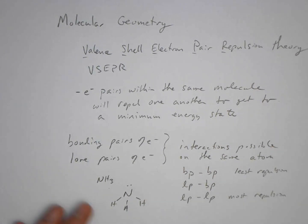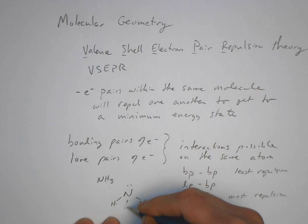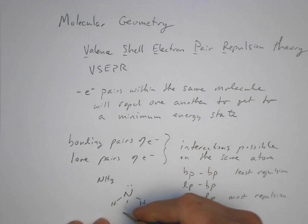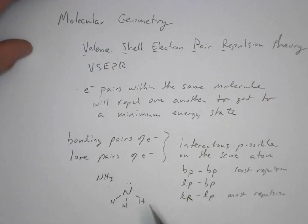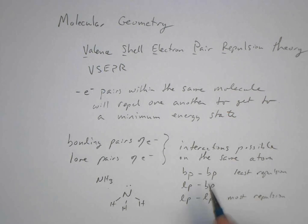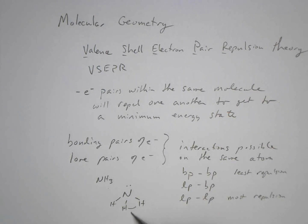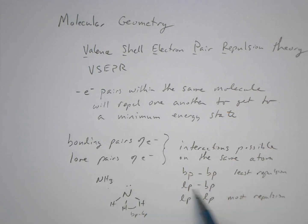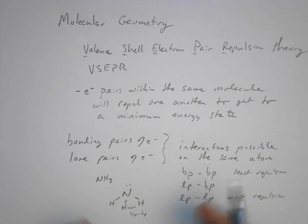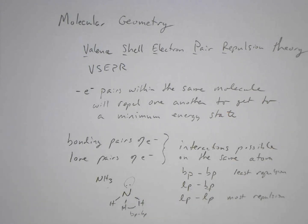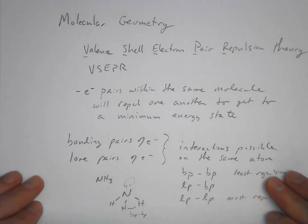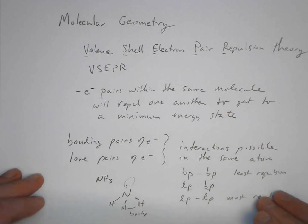Ammonia's Lewis structure has nitrogen with a lone pair of electrons and three hydrogens bonded to it. Within this molecule we have bonding pair–bonding pair interactions between the N–H bonds, and between the lone pair and each bonding pair there is greater repulsion — so the lone pair repels the bonding pairs more strongly.